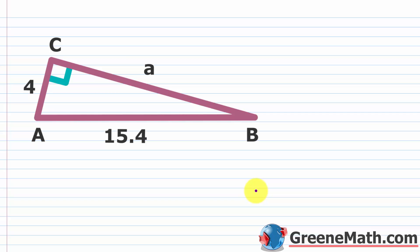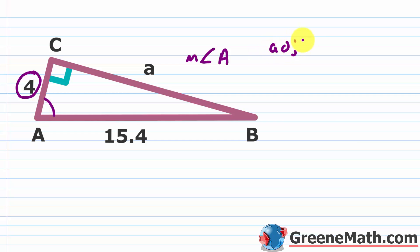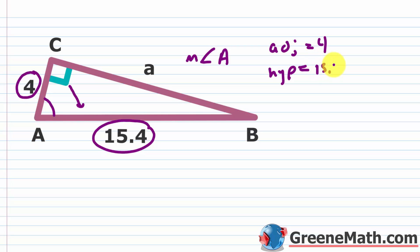Now we're solving a right triangle where we're given two sides. We want to find the measure of angle A. We're given the adjacent side equal to 4 and the hypotenuse equal to 15.4 — the hypotenuse is always across from the right angle. The trigonometric ratio for adjacent over hypotenuse is cosine, so cosine of angle A equals 4 over 15.4.